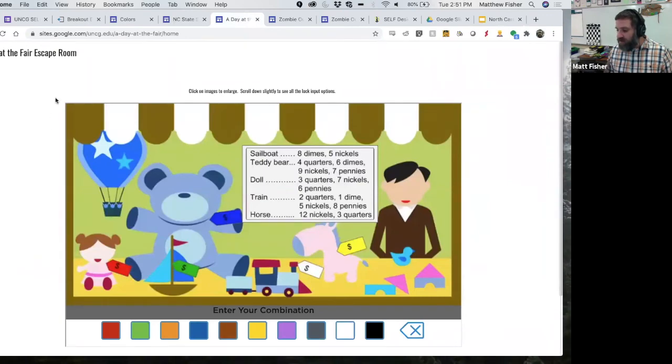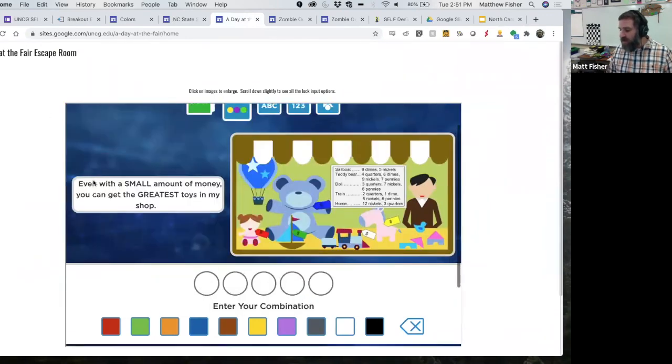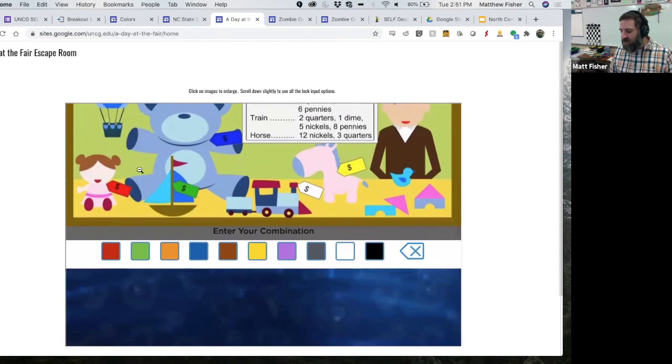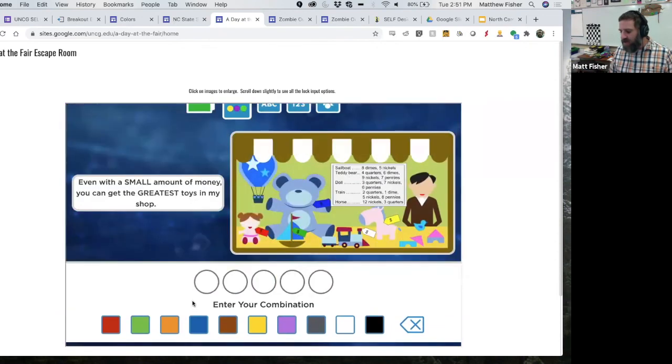Some of the puzzles might look something like this. This is a math puzzle where it says, 'even with the smallest amount of money, you can get the greatest toys in my shop.' So there's a little bit of a clue there. We give them a little hint about where am I going with this puzzle. And then this is all we give them is this picture. They have to figure out what am I supposed to do with this here. I've got this amount of money, these toys with the price tags on it, and then down here you've got this combination lock with the colors.